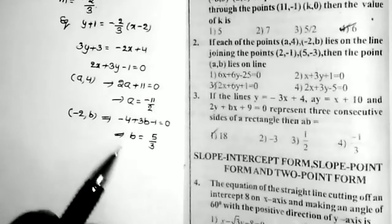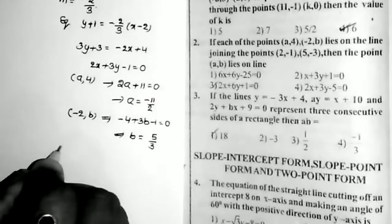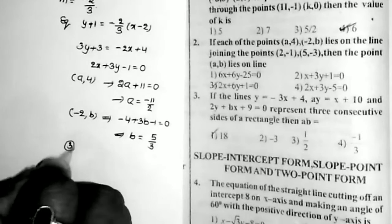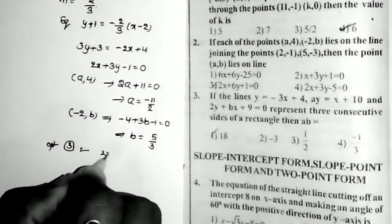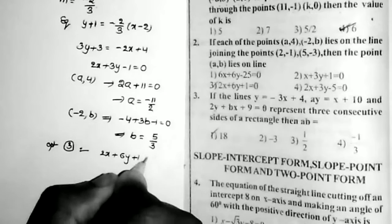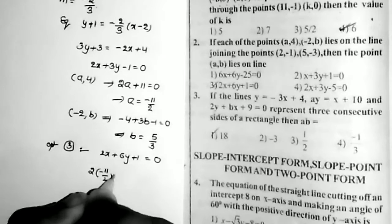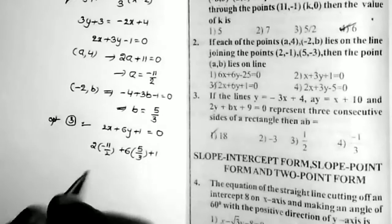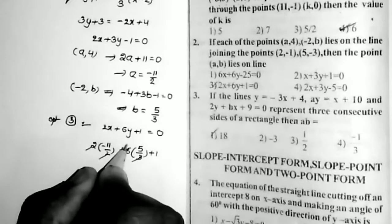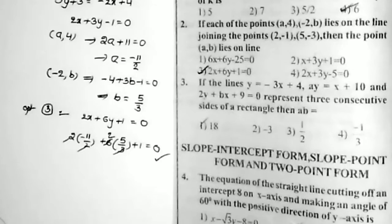Now we have a = −11/2 and b = 5/3. The point (a, b) lies on one of the given options. Taking option 3 for verification: option 3 is 2x + 6y + 1 = 0. Replacing a and b: 2(−11/2) + 6(5/3) + 1 = −11 + 10 + 1 = 0. Yes, this is the correct answer. Option 3 is the only correct option.